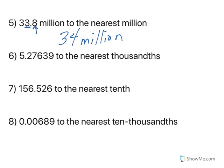5.27639 to the nearest thousandths. THS at the end tells me to the right of the decimal. So 1, 2, we're looking at the 6. 3 tells me to round down. So I'm just at 5.276.